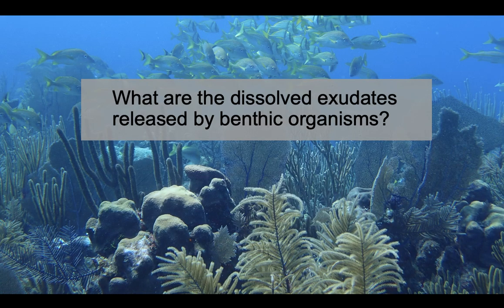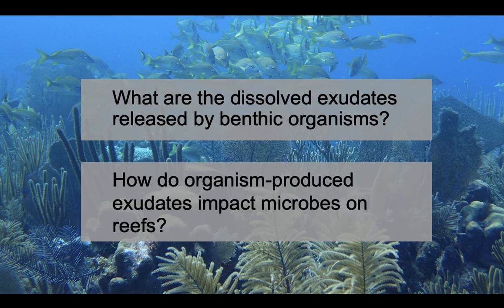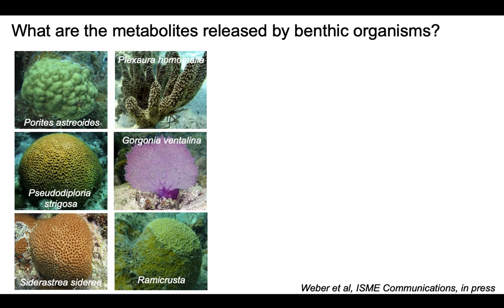What I'm going to talk about in the next three minutes is a study looking at what dissolved exudates are being released by benthic organisms, and how those organism-produced exudates impact microbial growth on reefs. To address the first question, we took six common benthic organisms on Caribbean reefs — three stony corals, two octocorals, and the invasive crustose coralline algae Rhamma crusta — held them in clean plastic tubs that aren't leaching their own metabolites, and collected metabolites over six hours compared to sterile reef water with no organisms. We then extracted that water and exposed those exudates to both targeted and untargeted mass spectrometry-based techniques.